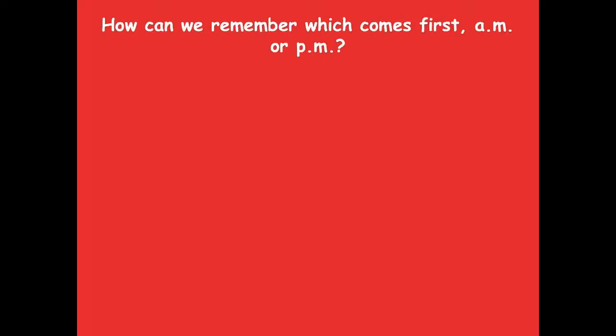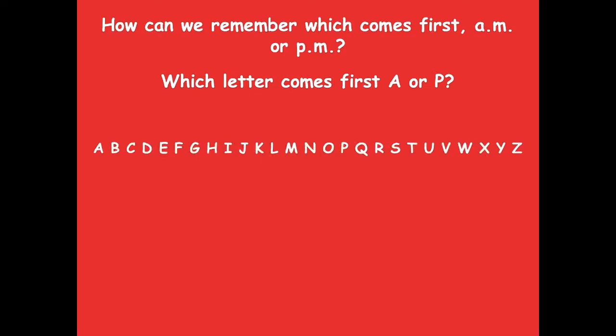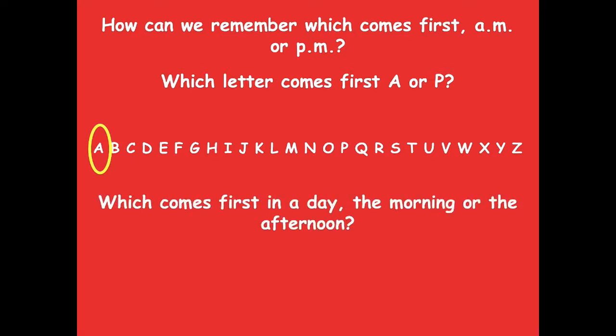How can we remember which comes first — AM or PM? Here's a little trick: which letter comes first in the alphabet, A or P? A does! So AM comes first in the day — that's the morning time. P comes later in the alphabet, and that's the afternoon. So A is first in the alphabet, meaning AM comes first in the day.